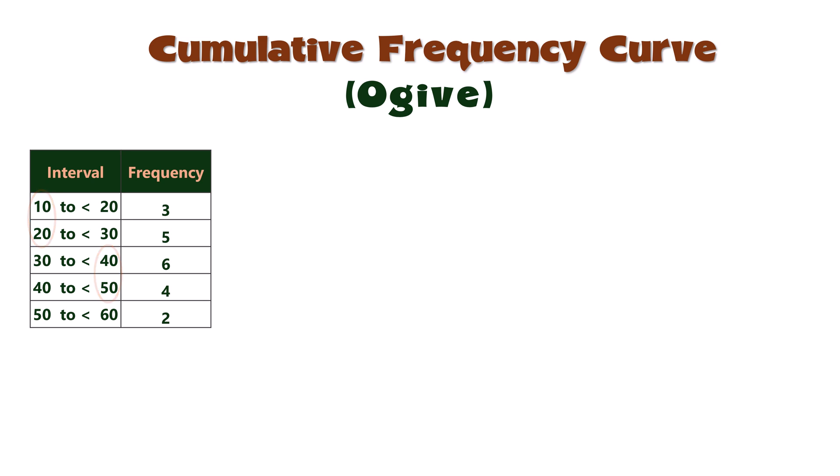To construct the ogive, we first determine the upper bounds of each class. These are the values at the end of each interval.